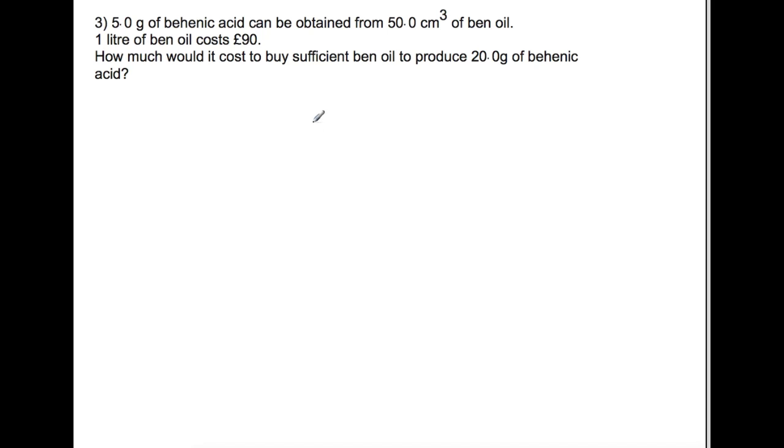Here's the final question. 5 grams of behenic acid is obtained from 50 milliliters of ben oil, and one liter of ben oil costs £90. How much would it cost to buy enough ben oil to produce 20 grams of behenic acid? So we're starting again from the relationship that we have first of all in the question, so 5 grams of the acid can be obtained from 50 milliliters of the oil.